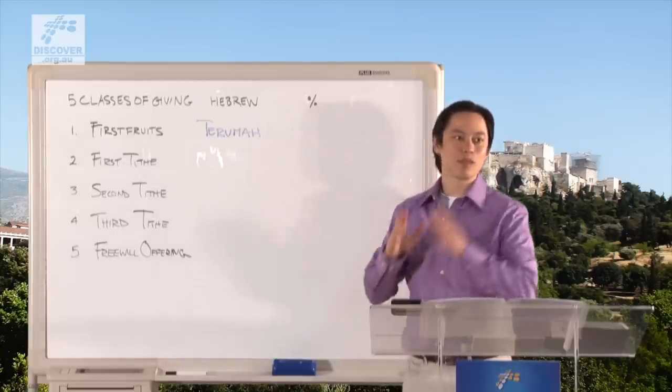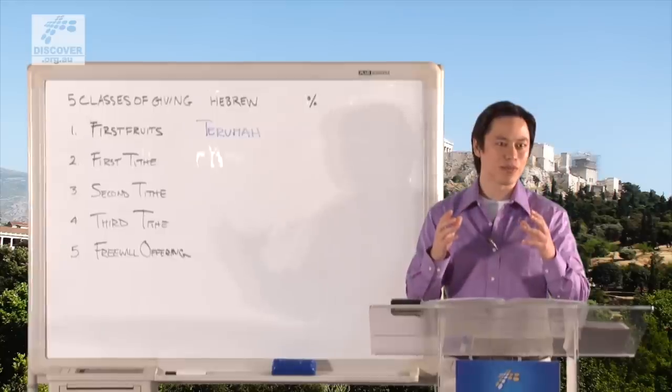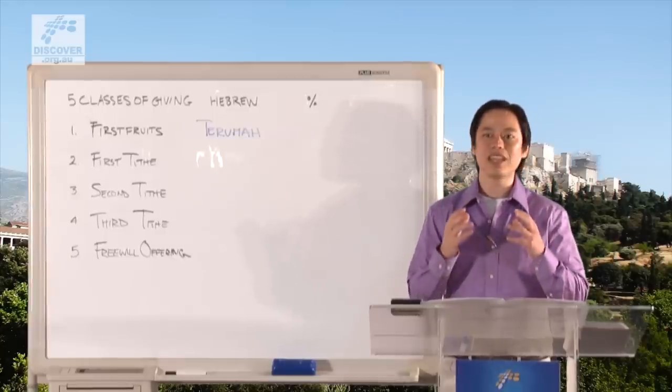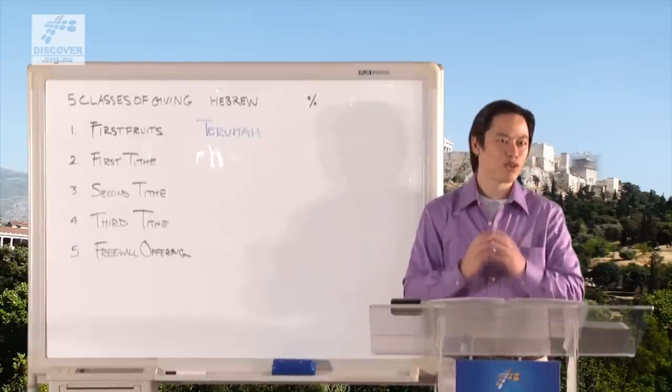And this was a debate because the Jews are very numerical, they're very calculative, they become good accountants. And so they debated for ages what's the exact amount for the Terumah.